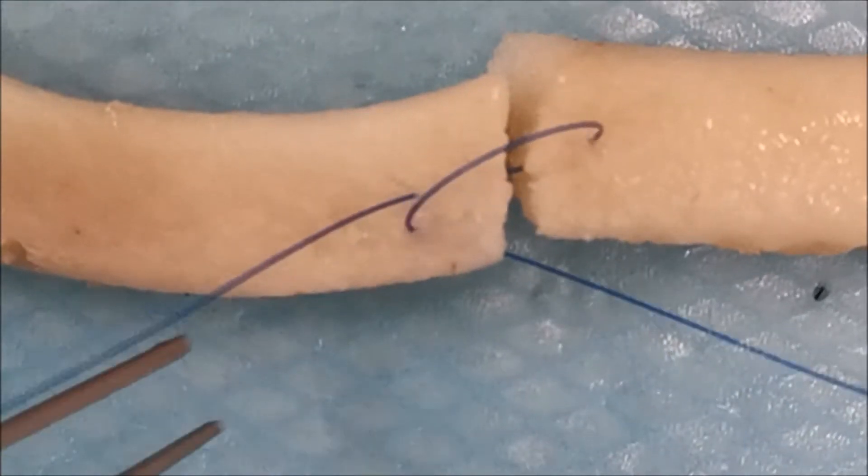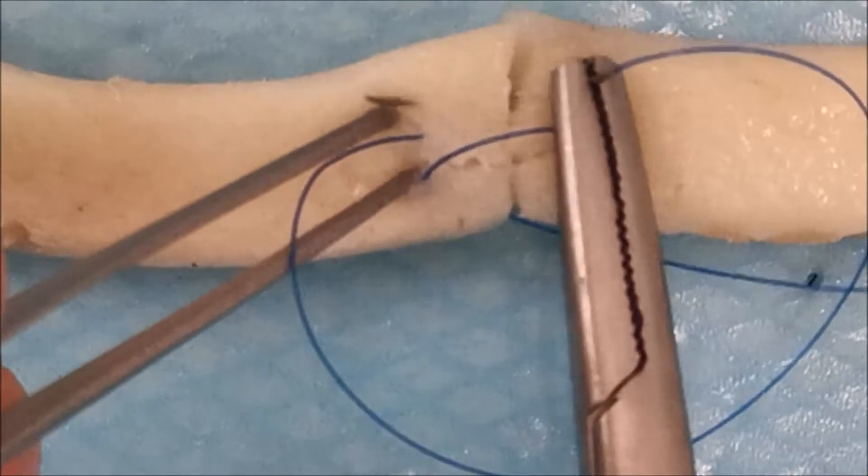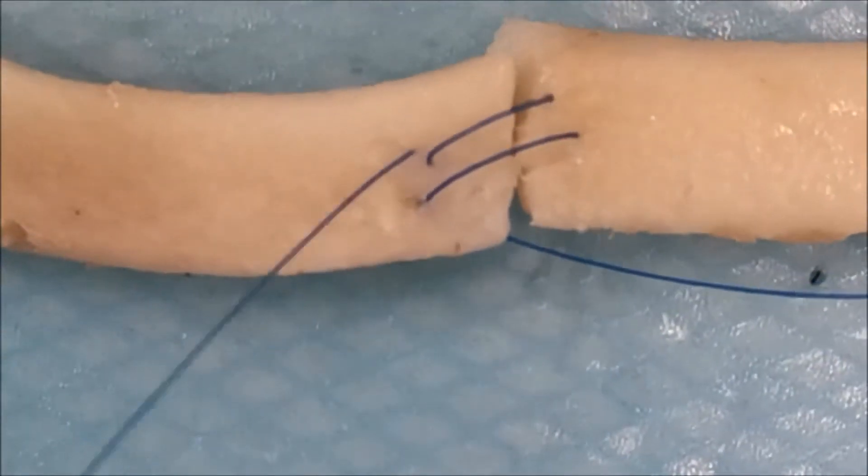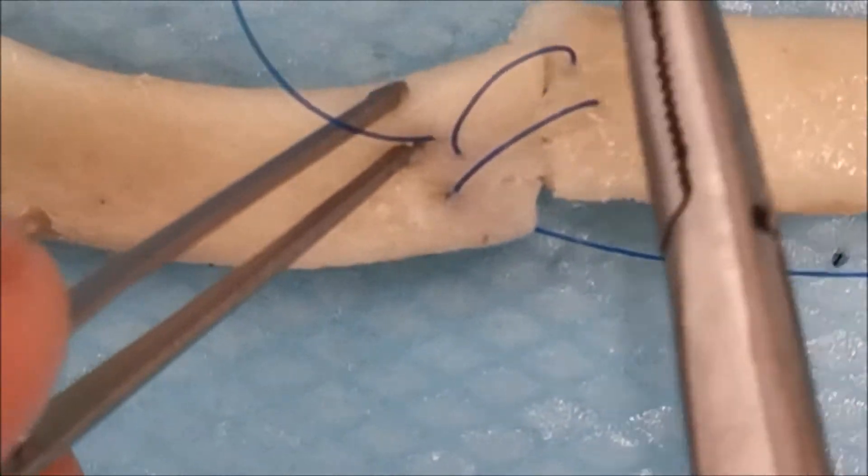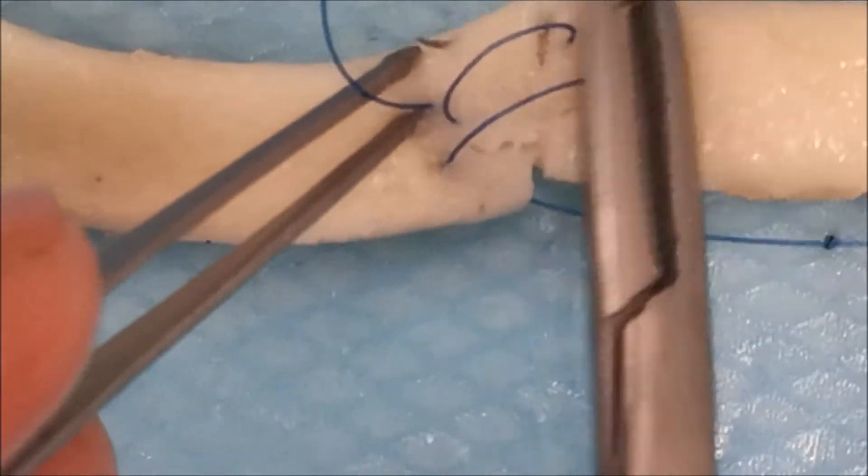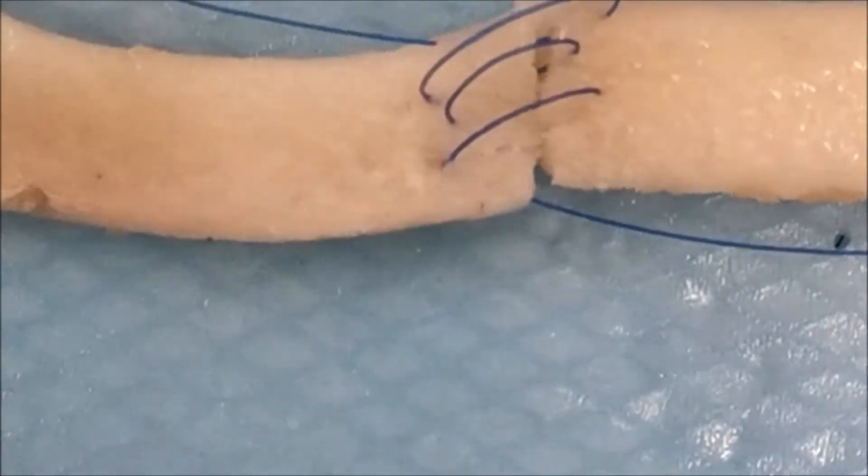This will weaken the tendon repair and result in a rupture during rehabilitation. Normally you would do smaller bites. For the purpose of demonstration, I've taken bigger bites here.